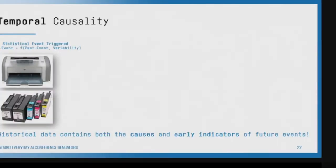We can create these causal structures based on domain knowledge as part of the system. Another kind of causality is temporal causality — events causing other events. When will a person buy a cartridge? It depends on when he bought a printer. In retail, there are many such causal structures. Repeat purchase of perishables depends on family size and all of that.